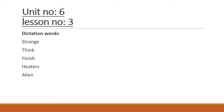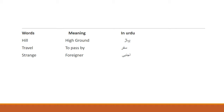Alien — alien means khalaai makhlooq. Aapne inke spellings bhi yaad karne hain aur inki pronunciation bhi aapne seekhni hai. Uske baad hain aapke paas lesson number 3 ke words meanings.